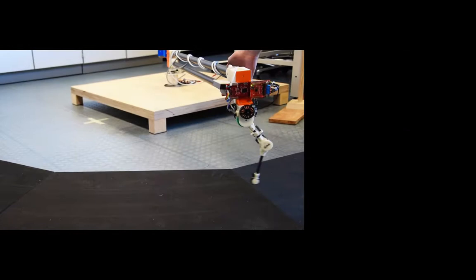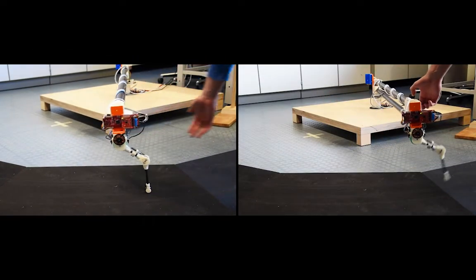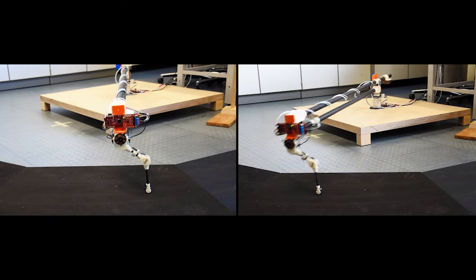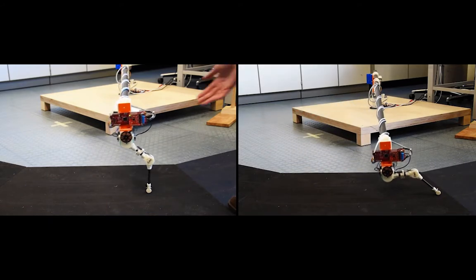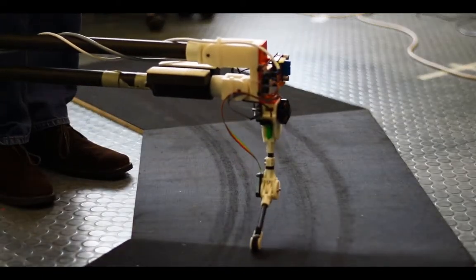One particular challenge is that robotic systems are often unstable, and borderline failures often receive the same reward as drastic failures. It can be very difficult to learn from these failures, as there is little or no gradient in the reward signal.